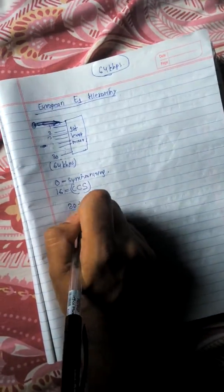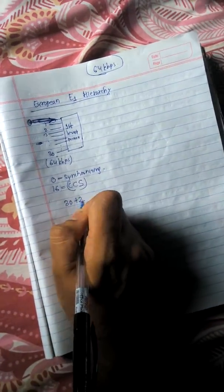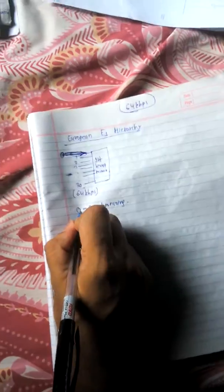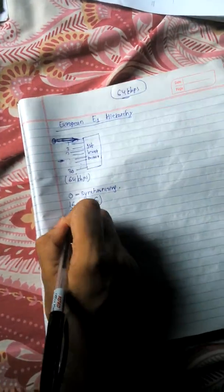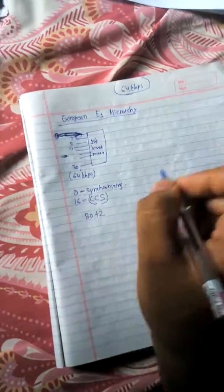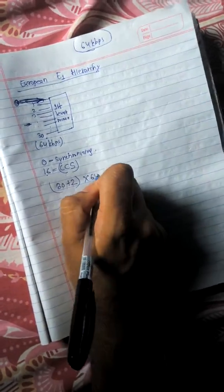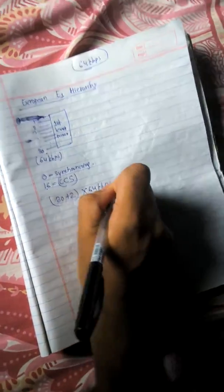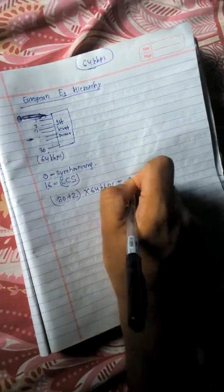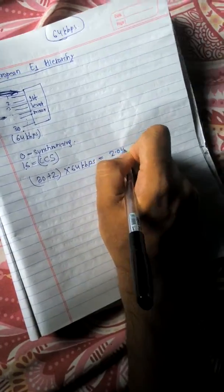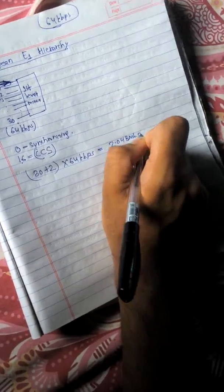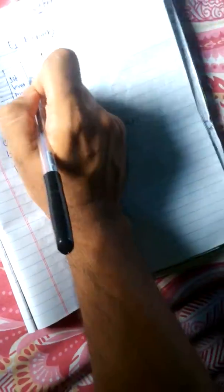The total speed of the first-level multiplexer is 30 plus 2 — the two channels being channel zero and channel 16 — multiplied by 64 kbps, which ultimately gives us a speed of 2.048 Mbps.